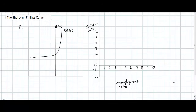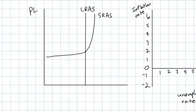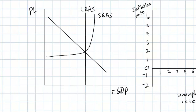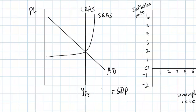To understand unemployment and inflation a little bit more clearly, we can start by looking at an aggregate demand, aggregate supply diagram for a particular country. We've got a simple ADAS model with an economy that in the short run is producing at its full employment level, so let's draw an AD curve that intersects the SRAS curve right here at the full employment level of output. We can assume that in this economy the prevailing level of unemployment is equal to the natural rate of unemployment.